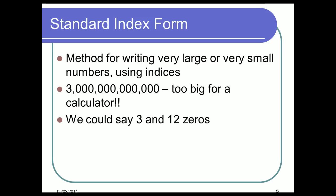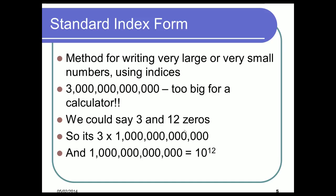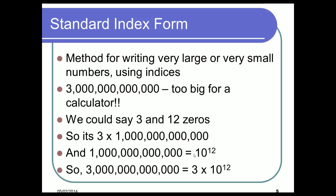We could say three trillion is three with 12 zeros, or we could say it's three times one trillion. One trillion is the same as 10 multiplied by itself 12 times. So what we could say is three multiplied by 10 to the power of 12 — and that's the way we write it in standard form. In this case that number is totally accurate, but in many cases in standard form we round part of the number to give a slightly rounded answer.